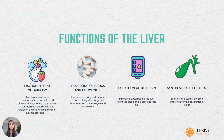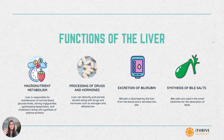The next function of the liver is the synthesis of bile acids or bile salts. Bile salts are made of bile acids that are bound with two amino acids, that is glycine and taurine, and bile salts are used in the small intestine for the absorption of lipids. Bile salts are important and the synthesis happens in the liver.